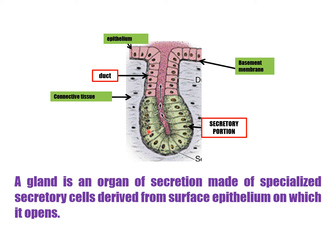When epithelial cells run downward, there is formation of the gland — the secretory portion — connected to the surface by a duct, surrounded by connective tissue. This glandular tissue synthesizes substances like hormones, saliva, mucus, or acid for release into the bloodstream or into cavities of the body.